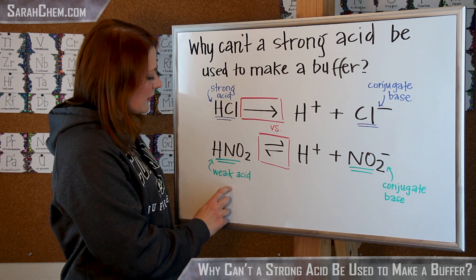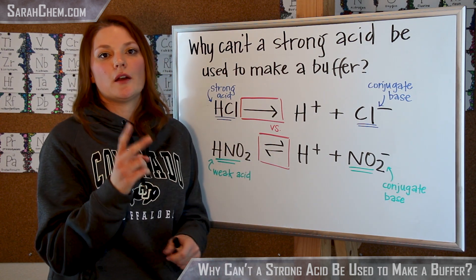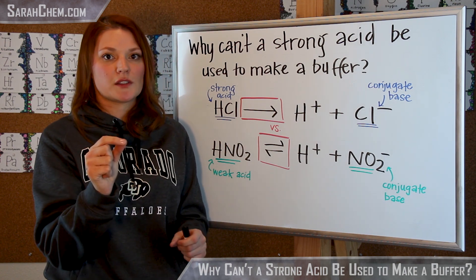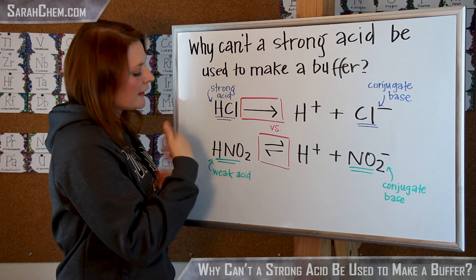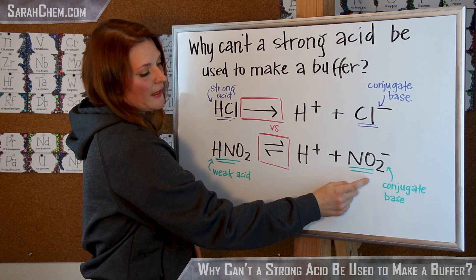Now if we compare that here to this nitrous acid, which is a weak acid, we see that it has a two-way arrow. It reaches an equilibrium because it only partially dissociates. So that means if I've added a base, this could react with the base, move forward, and we'd make its conjugate base here, NO2-, and an acid.